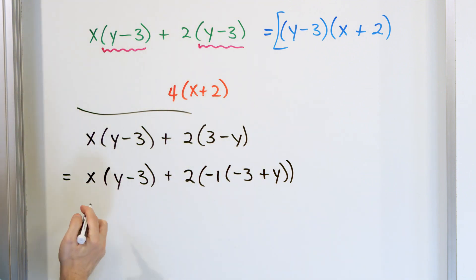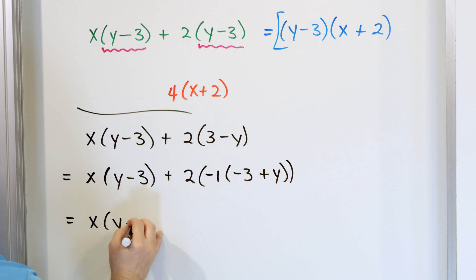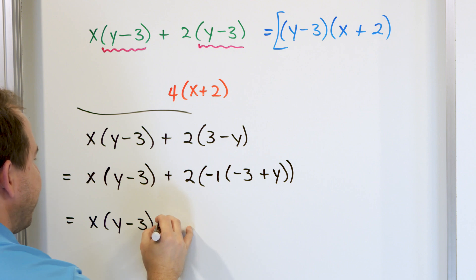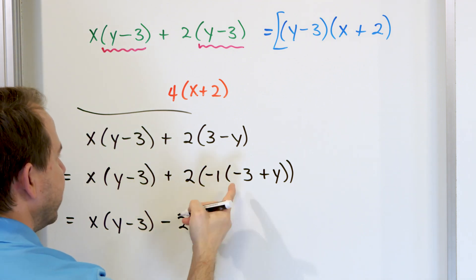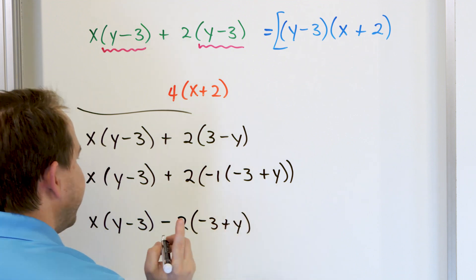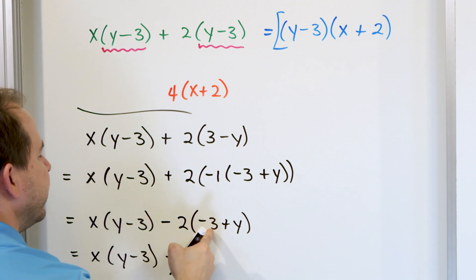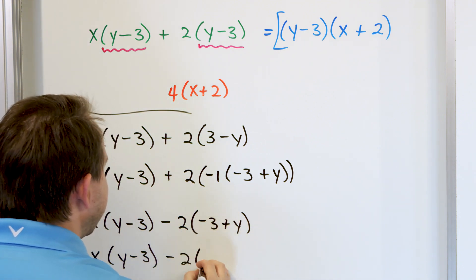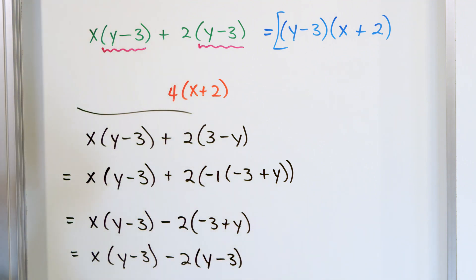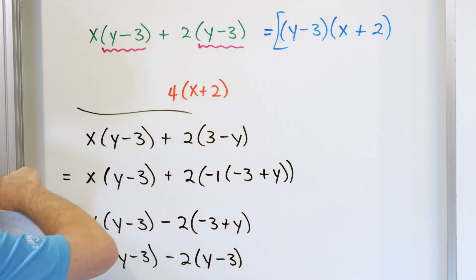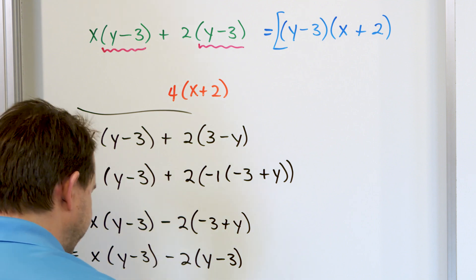So let's get through the problem. What we have is x times y minus 3, and the negative 1 is factored out but multiplied by the 2, so we get minus 2 times the quantity negative 3 plus y. In the next step, since it's negative 3 plus y, I can change the order of the addition to get y minus 3. So now I do have a common term y minus 3 and another common term y minus 3 — those two terms can be pulled out as a common factor.